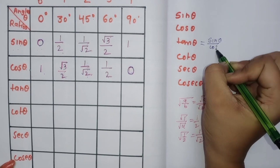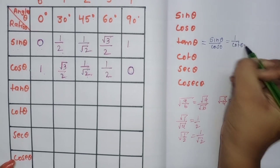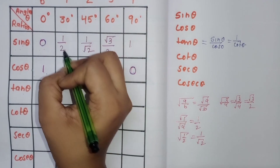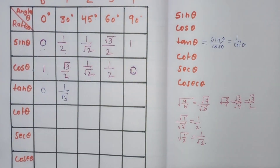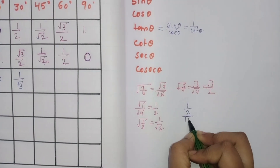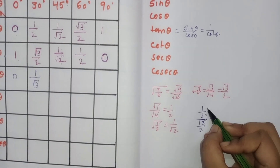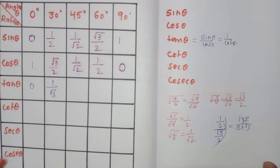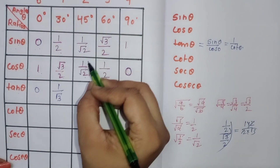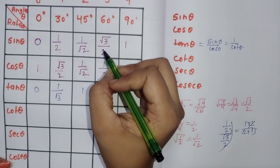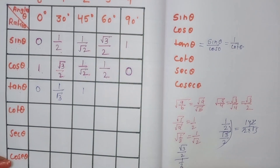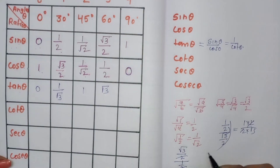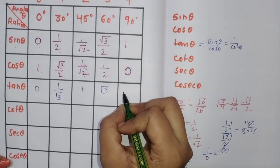Tan theta equals sin theta divided by cos theta. So tan 0° = 0/1 = 0; tan 30° = (1/2) ÷ (√3/2) = 1/√3; tan 45° = (1/√2) ÷ (1/√2) = 1; tan 60° = (√3/2) ÷ (1/2) = √3; tan 90° = 1/0, which is not defined.